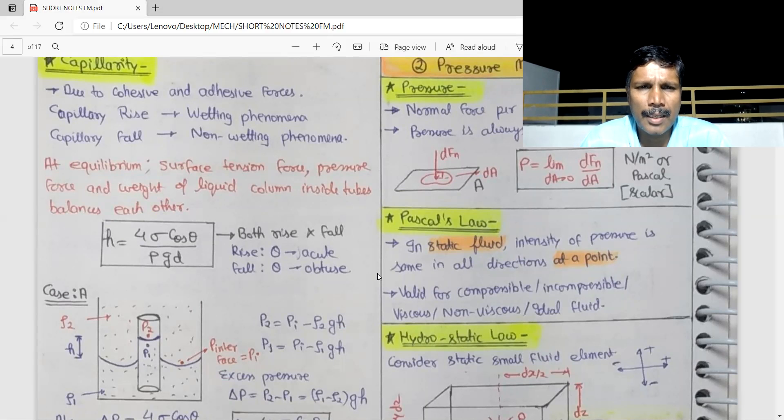P1 is P atmospheric minus rho1 g h. P2 is P atmospheric minus rho2 g h.